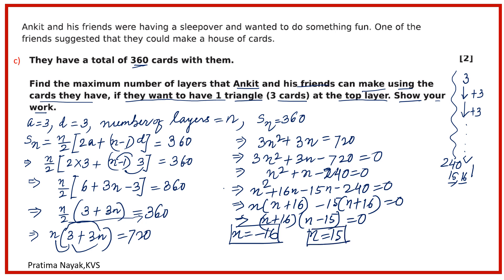Since the number of layers cannot be negative, n = −16 is rejected. Therefore n = 15, so the maximum number of layers is 15.